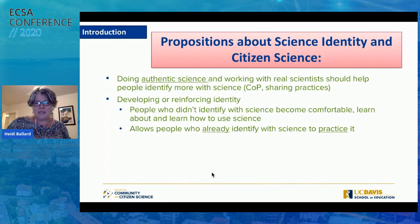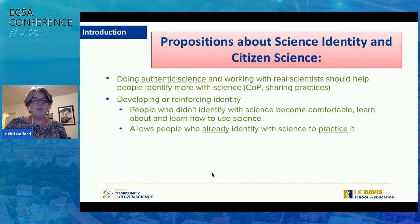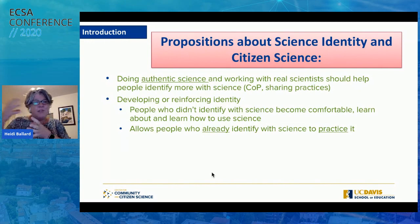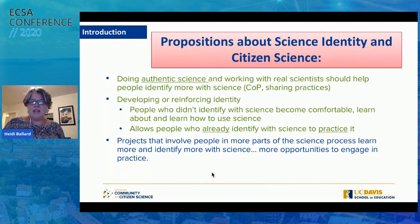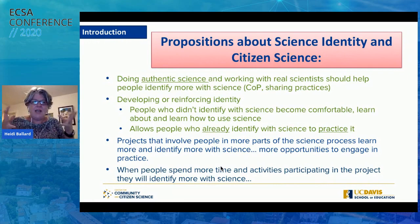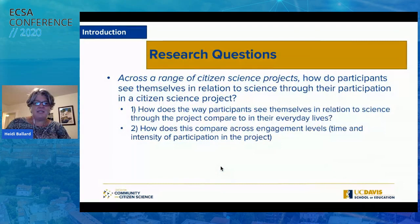There are many propositions about this. Doing authentic science and working with real scientists should actually help people identify more with science — the idea of communities of practice. Developing or reinforcing identity isn't just about zero to lots. Some people may already identify with science, and when they participate in citizen science it gets reinforced. Other people may not identify with science at all, and participation might really show them a way they can identify with science. There's also the idea that participating in more parts of the scientific process and more intensive participation might impact how people identify with science.